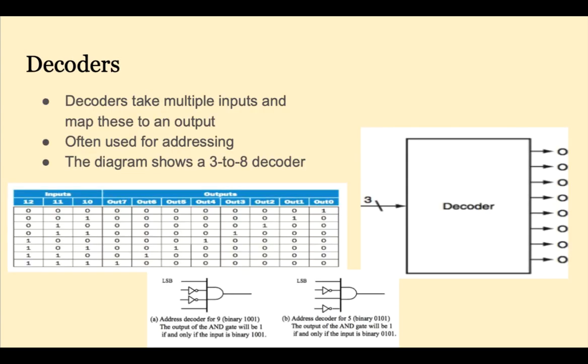Decoders take multiple inputs and map these to outputs. Looking at our truth table, we have 3 inputs and 8 possible outputs. The block diagram on the right shows this as well. Looking back at the truth table, you see that for every possible combination of the 3 inputs, 1 and only 1 output is 1. At the bottom, we see simple AND gates and inverters used for decoding addresses.